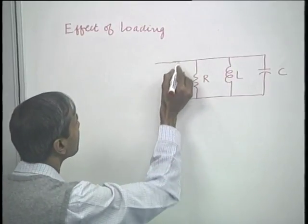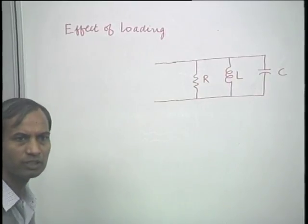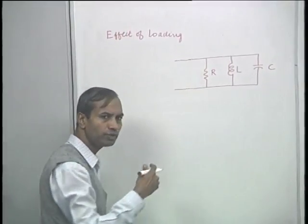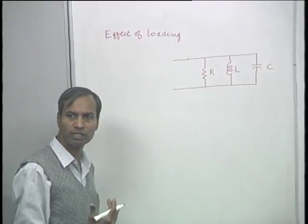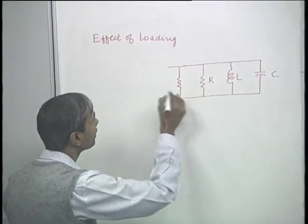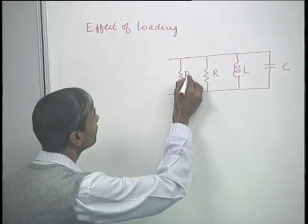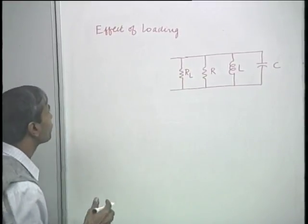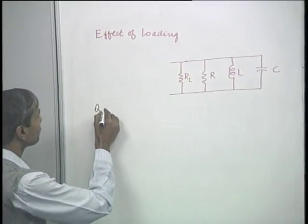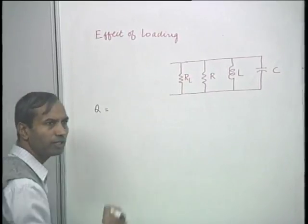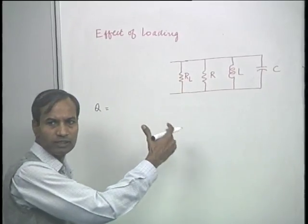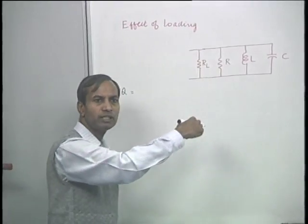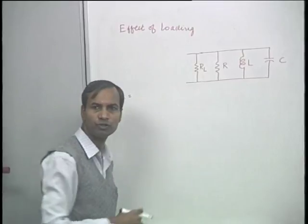If the resonator is connected, as is the case in practice, to some external agency, or some other loss mechanism is introduced in the resonator, then that additional loss — due to loading by the external agency — can be represented by another resistance in shunt, which we give the symbol R_L. Recalling that for the parallel resonant circuit, the quality factor was given as R divided by omega-naught times L, the R required in the numerator will be the parallel combination of R and R_L.